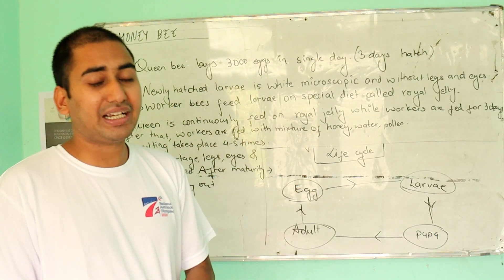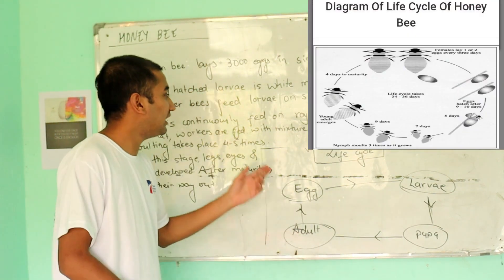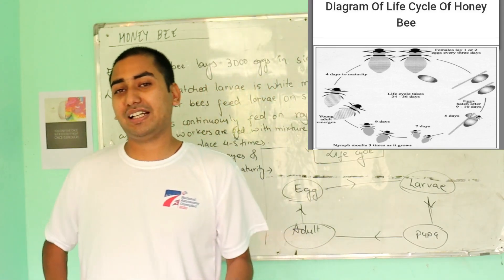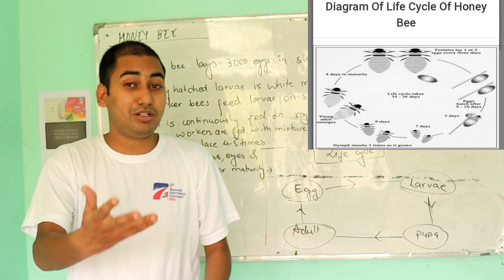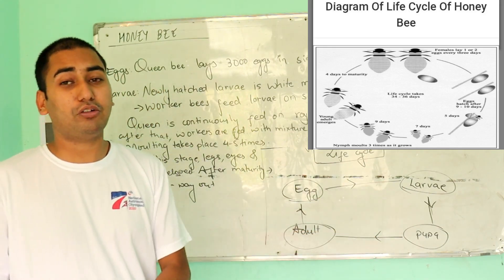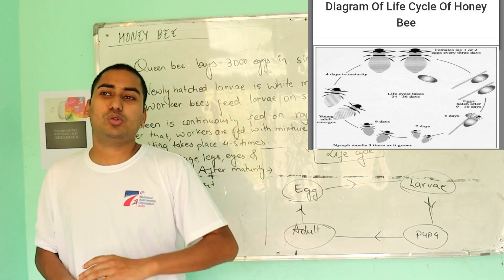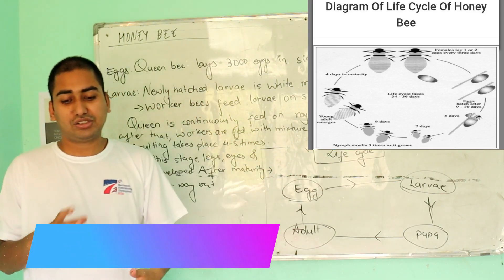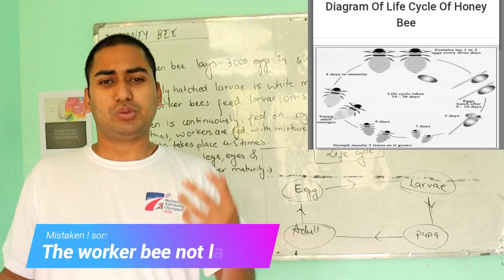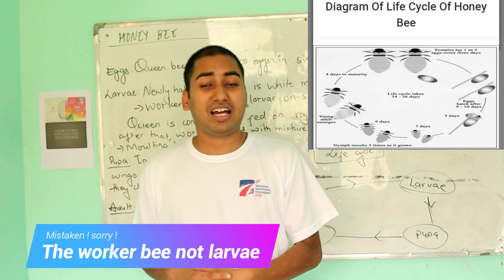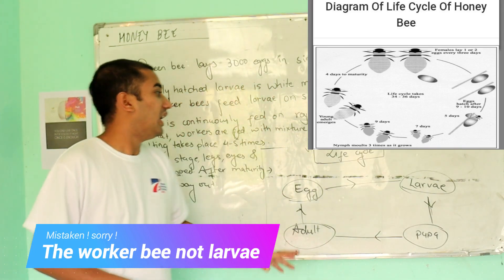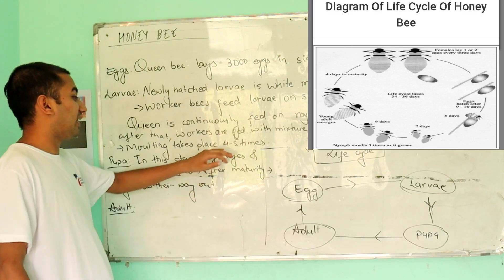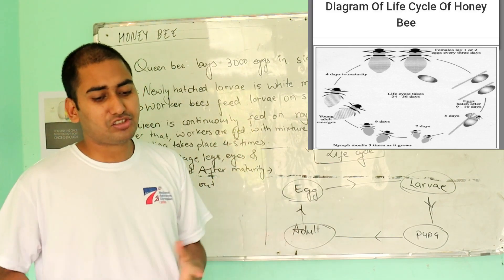The larvae eat food and water. For the first 3 days, worker bees provide royal jelly to all larvae. After that, the mixture of honey, water, and pollen is fed to worker and drone larvae, while queen larvae continue to receive royal jelly.